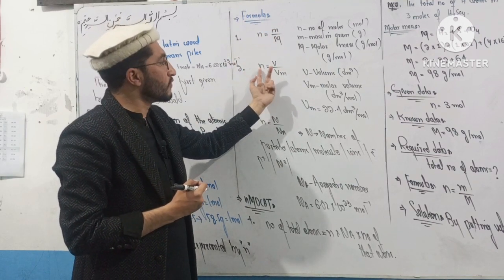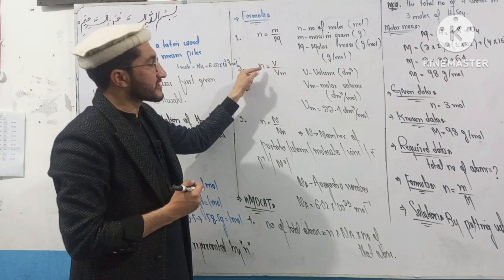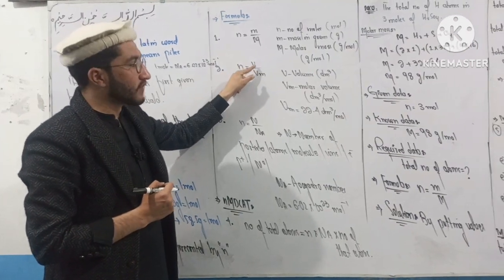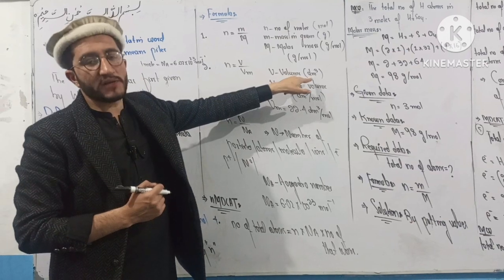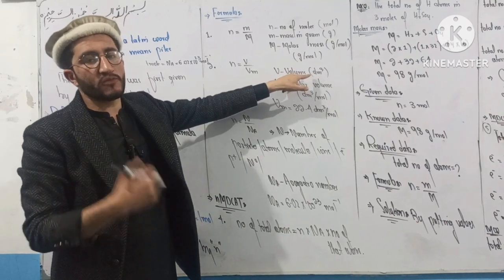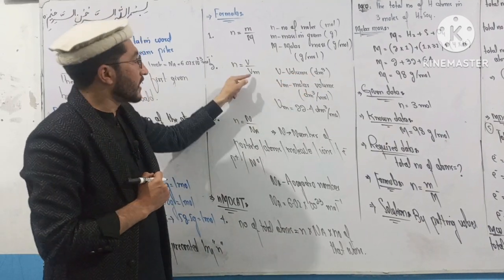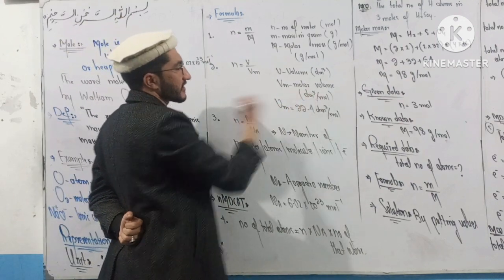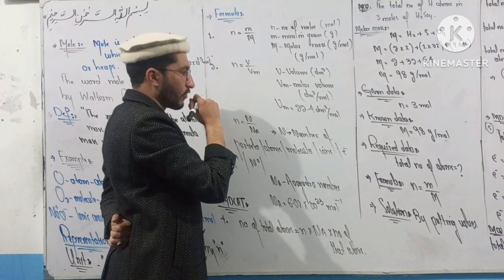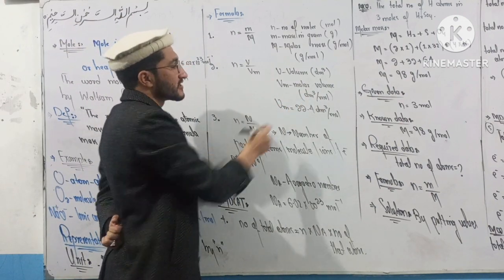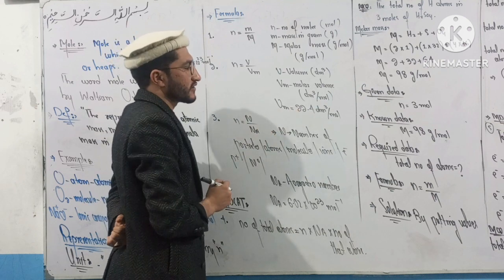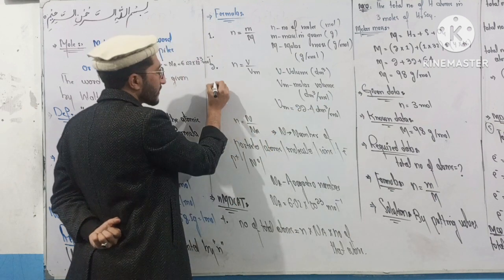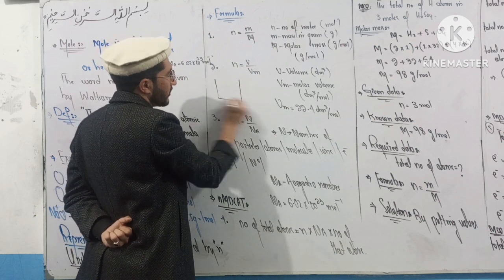The second conversion involves volume. Small n is the number of moles, V is the volume. The formula is n = V / 22.4, where 22.4 dm³ is the molar volume of a gas at STP per one mole of substance.